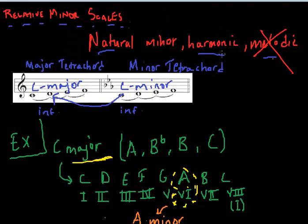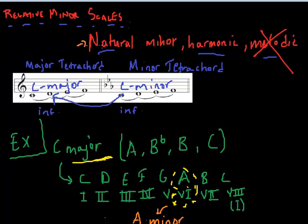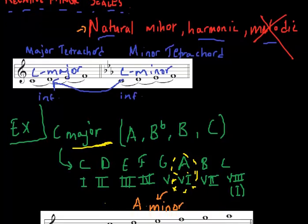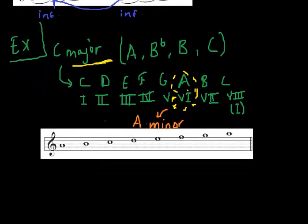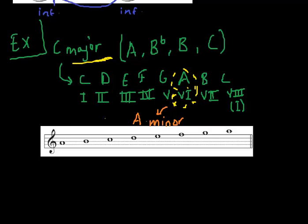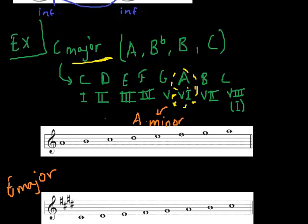Now, the natural minor, this term, is one which uses the same key signature as its major relative scale with no changes. Therefore, the natural minor scale of A borrows the key signature of its relative major scale of C. Let me show you an example just like this, but with the E major.